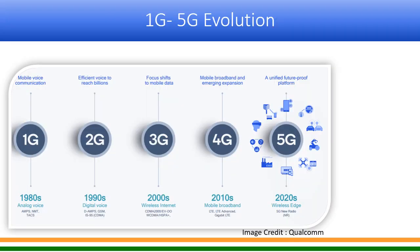This is a very good picture given by Qualcomm in one of its white papers about the evolution. So let us have a look at it. 1G telecommunications came during the 1980s — not the exact year, but during that period. At that point in time, for the first time we had some sort of mobile voice communication. It was analog voice — the complete technology was analog.